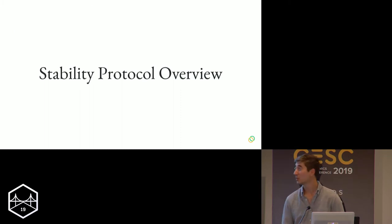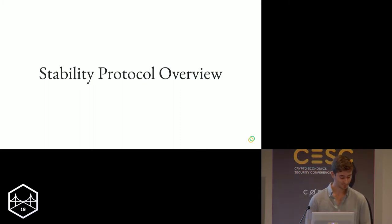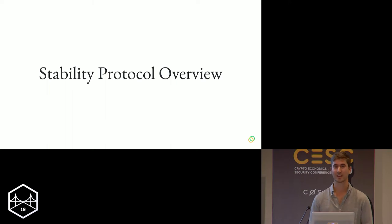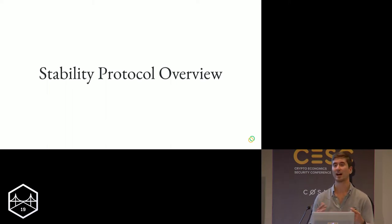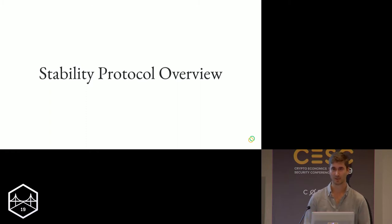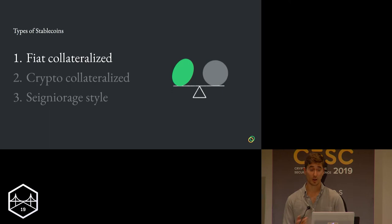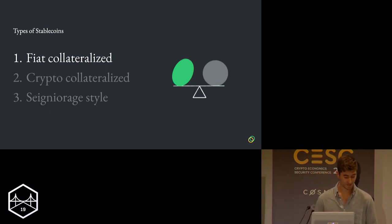Let me tell you a bit more about how the stability protocol works. To do so, it makes sense to start with a high-level overview of the existing stablecoin landscape. Broadly, there are three types of stablecoins.